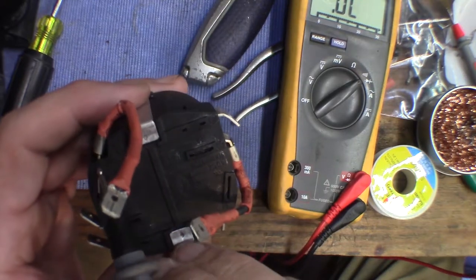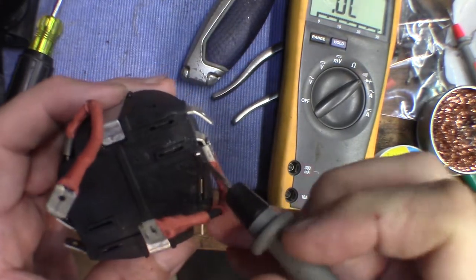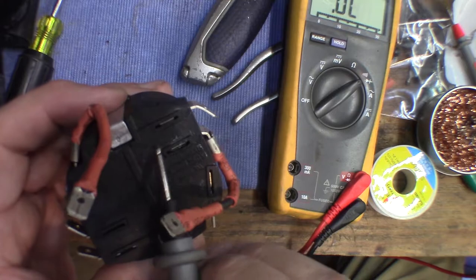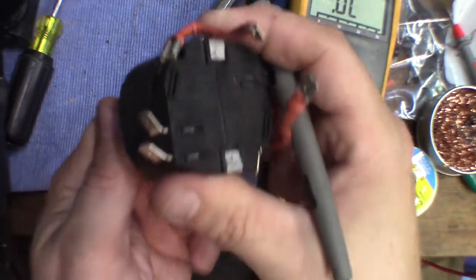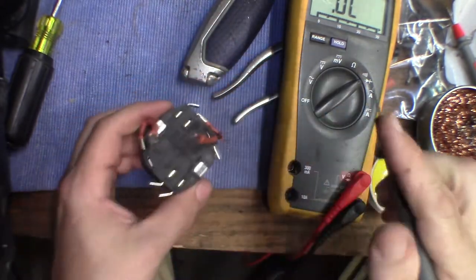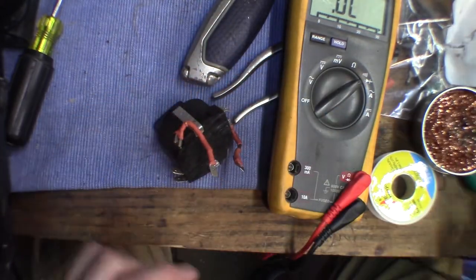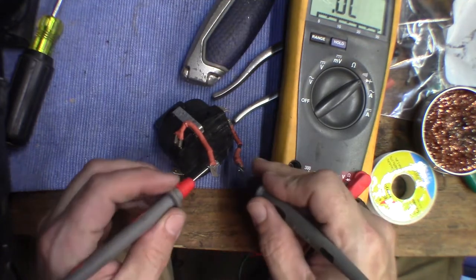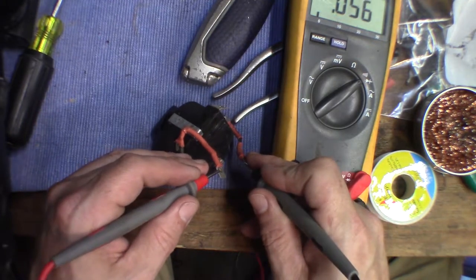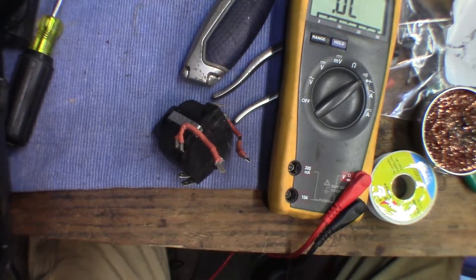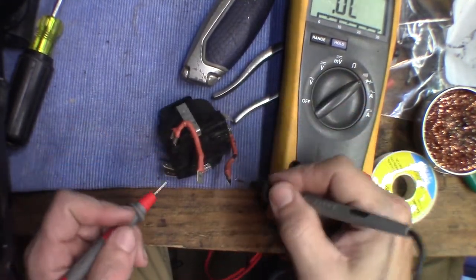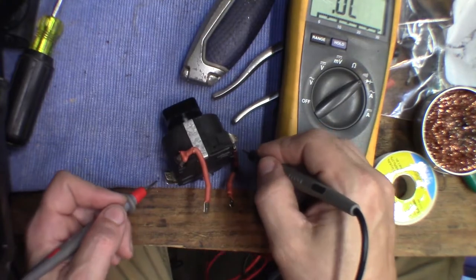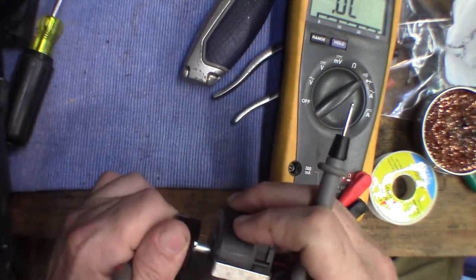So we have 1 to 3. And there actually is an arrow there. At 1 to 3, when the timer is on, we do get power going through. Whereas anywhere else we try to go through, we get nothing. So that's got to be our setting.